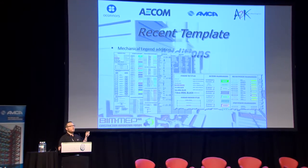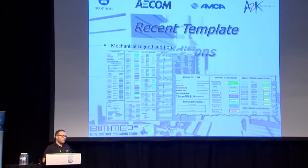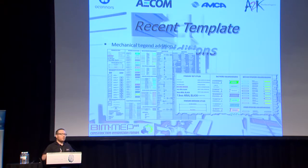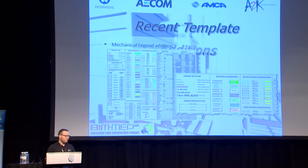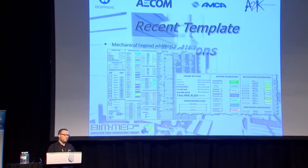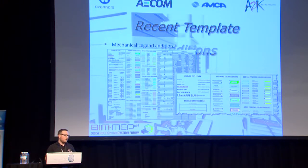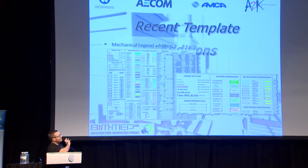I want to quickly go through some of the recent developments for those of you using it at the moment or newer to it. One thing is adding mechanical legend views - this has been a big step in getting this into the template. A lot of it is about documentation, so getting consistency through tagging, text, graphical styles, hash patterns, and tying that into the BIM - making sure it ties in with the duct specs and insulation specs. In the latest version of the template you'll start to see this stuff combining really well.